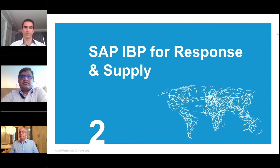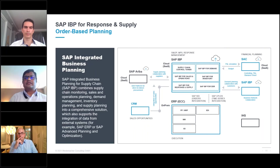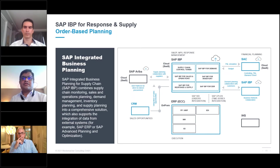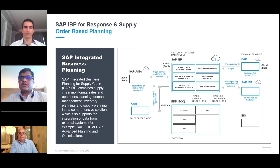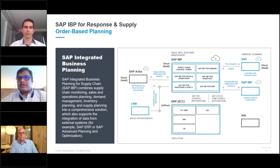My colleague Sashi will now give an overview of the Response and Supply module of IBP. IBP is a comprehensive solution enabling planning from sales and operations planning through to order fulfillment. It supports integration of data from multiple systems — SAP Analytics Cloud for financial planning, SAP Ariba, ERP, and CRM for sales opportunities — bringing all information into one system for end-to-end planning.